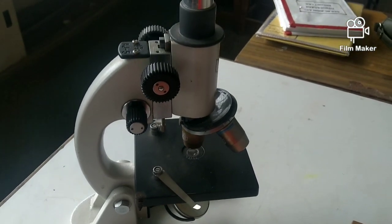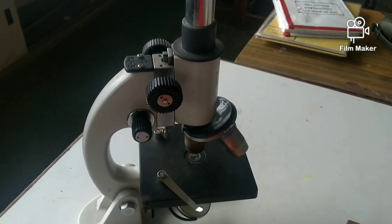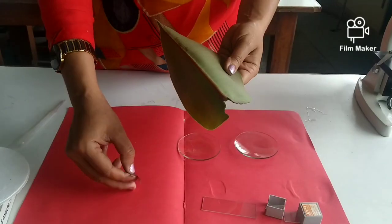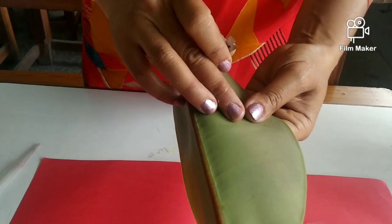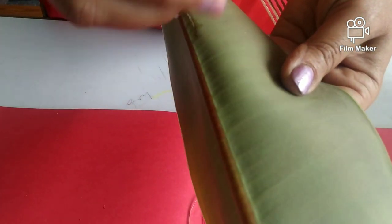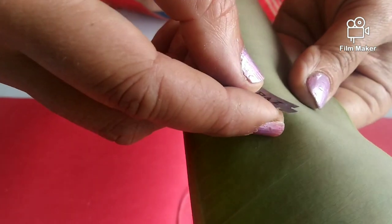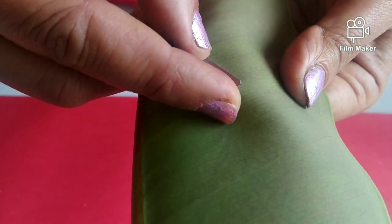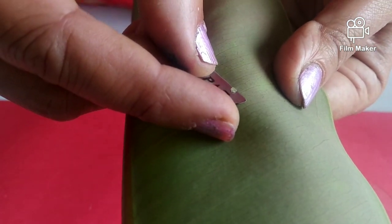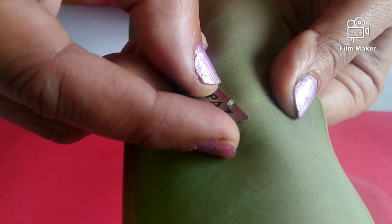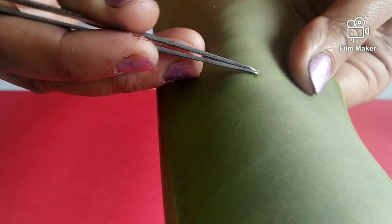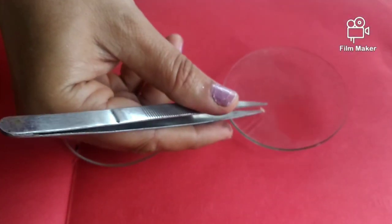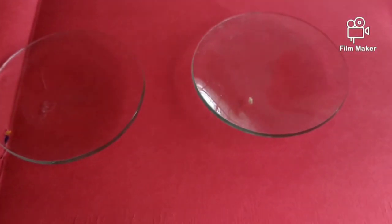Now the first step is to take out the epidermal peel from the lower epidermis of the leaf with the help of a sharp blade. The piece of epidermis is transparent. It should be a very thin layer. Now place it in the watch glass.